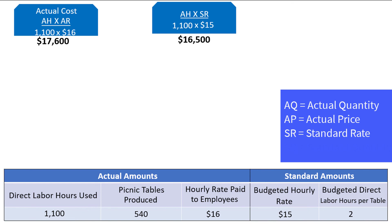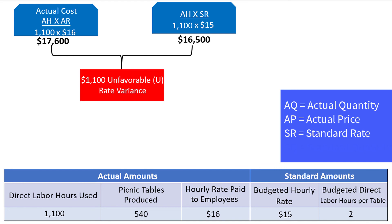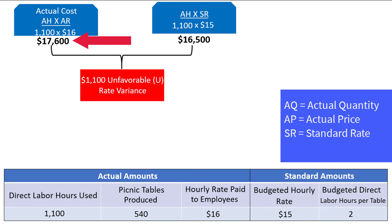Both values use the actual hours, but one multiplies by the actual rate and one multiplies by the standard rate. In other words, we have held hours constant and allowed only the rate to vary. When we let only the rate vary, we get the rate variance when we subtract the two values: $16,500 minus $17,600 is equal to a $1,100 unfavorable rate variance. You can verify this is unfavorable because the $16 actual rate is higher than the standard rate of $15. You can also tell it is unfavorable by noticing that the values decrease from left to right.